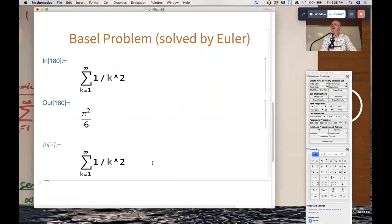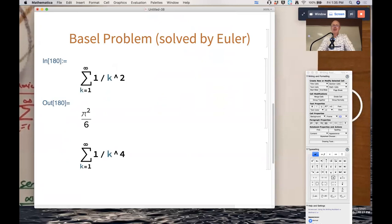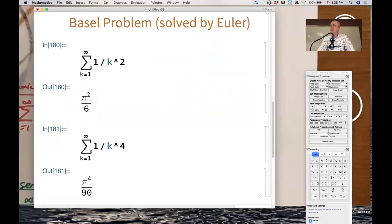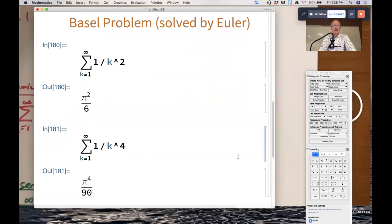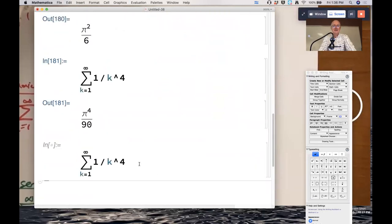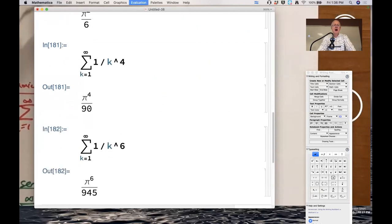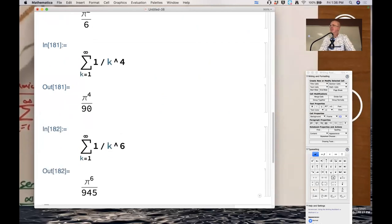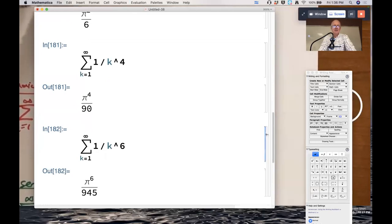Euler also generalized this to figuring out what this summation is, for example. And it also involves pi. Pi to the 4th over 90. Shocking. I'm serious. Very shocking. Who would have ever guessed it? How can these involve pi? Where are the circles? Are there hidden circles in these problems?